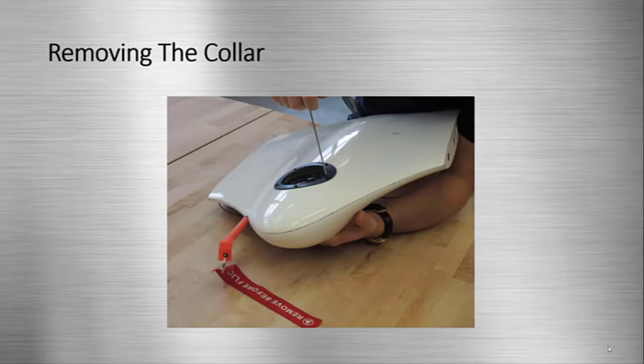When removing the screws on the collar, be sure to support the sensor so that it does not fall out and get damaged. The disassembly process does not require the screws to be taken out in any particular order. Now we can flip the Bramore back over.